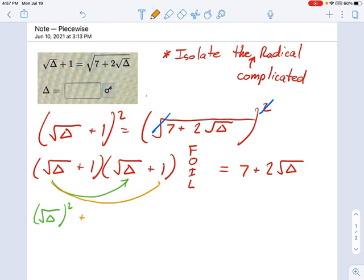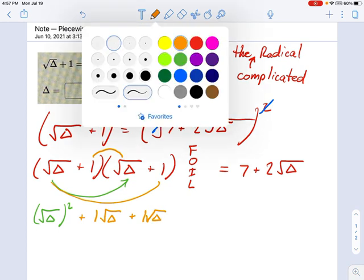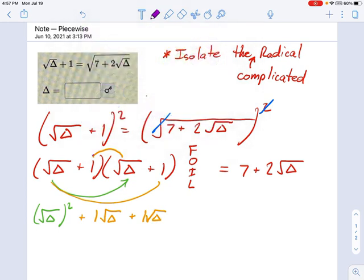In orange, we've got plus 1 square root of delta. And then we have the inner terms right here. That's another plus 1 square root of delta. And the last term is this, well, it's the last term, right? F-O-I-L. So, that's going to be 1 times 1. So, that's plus 1. And there we go. There is our foiled equation.